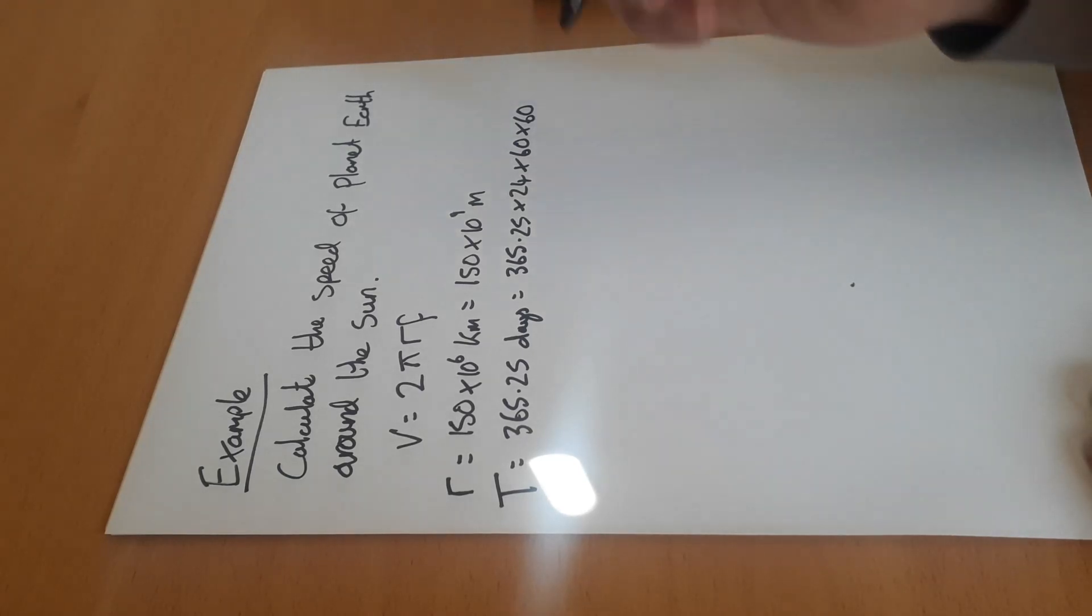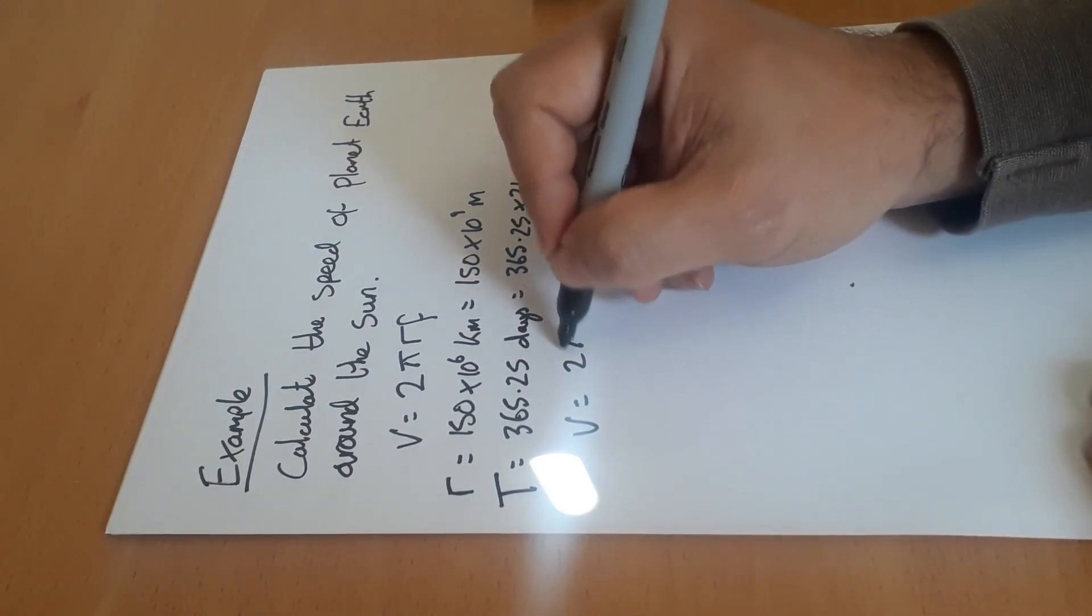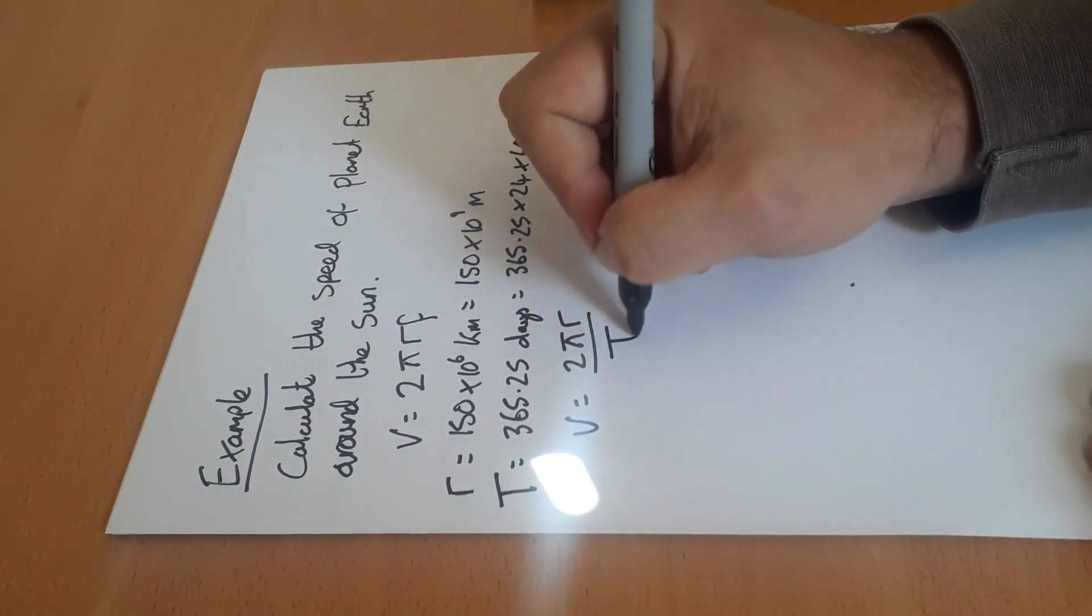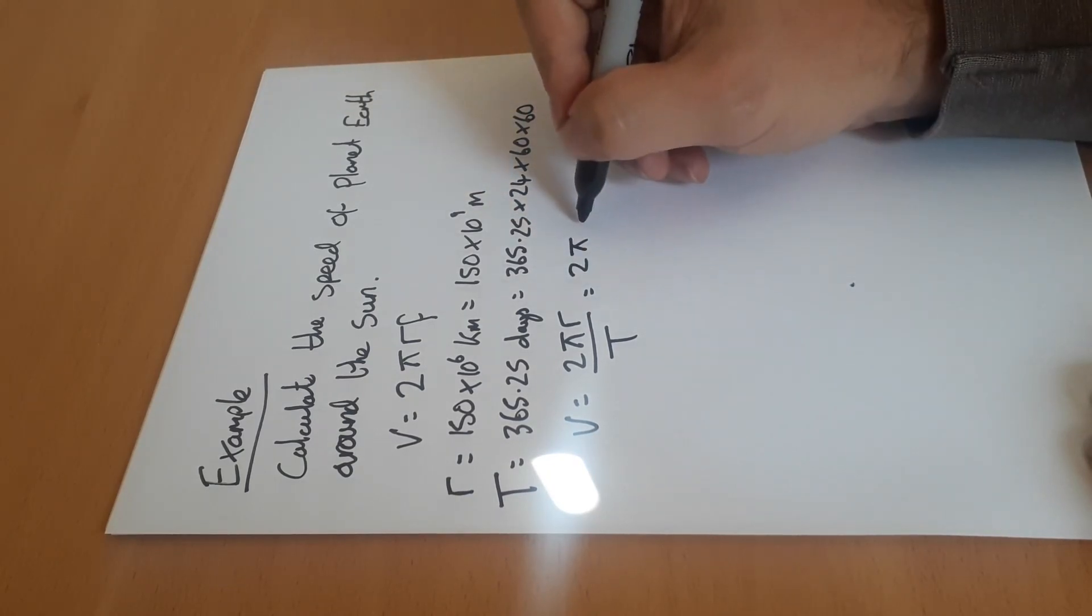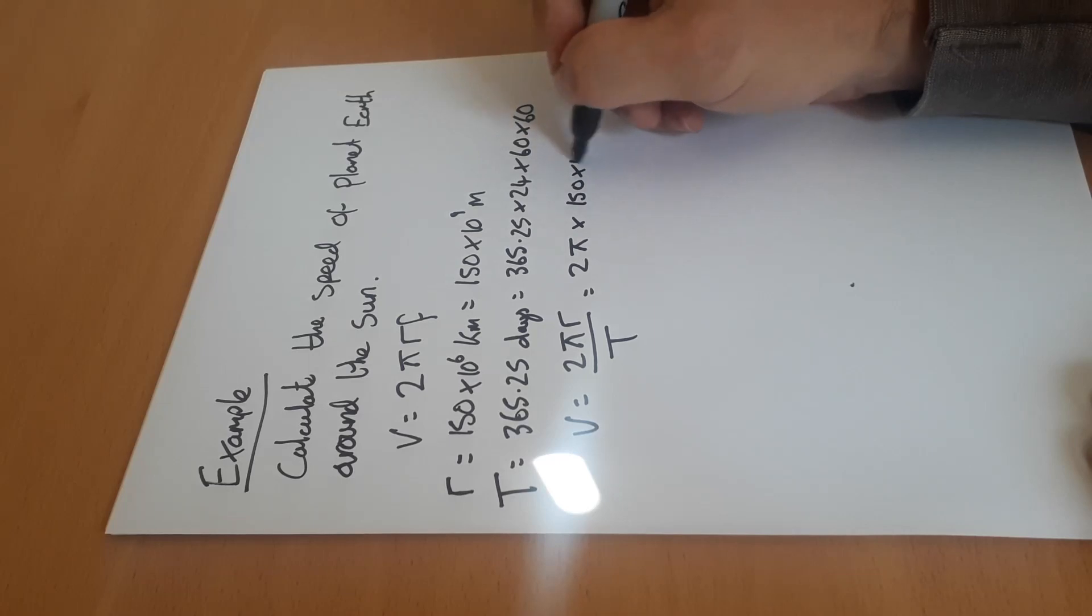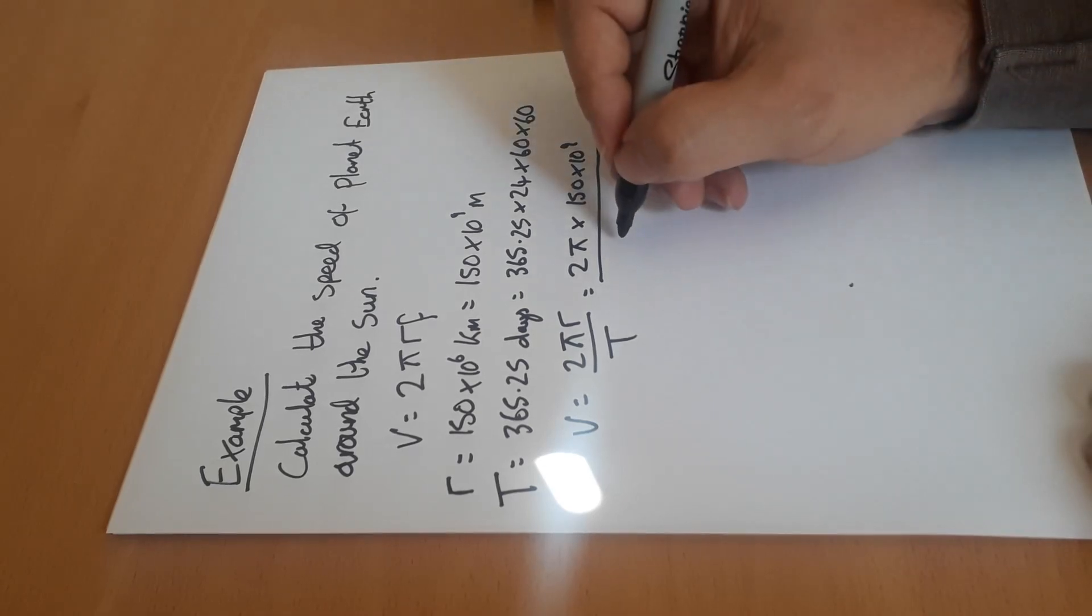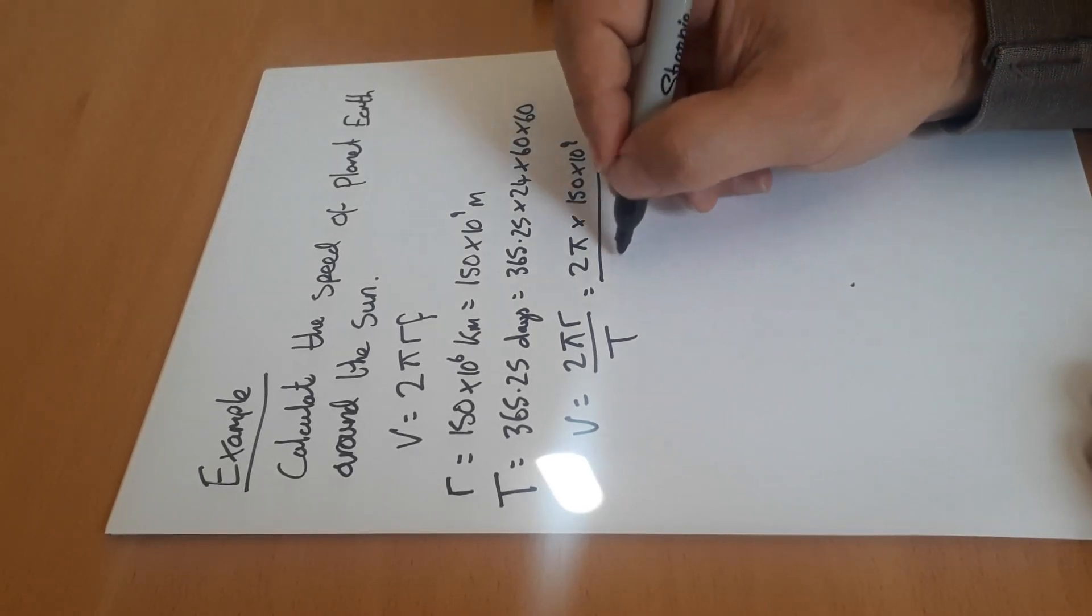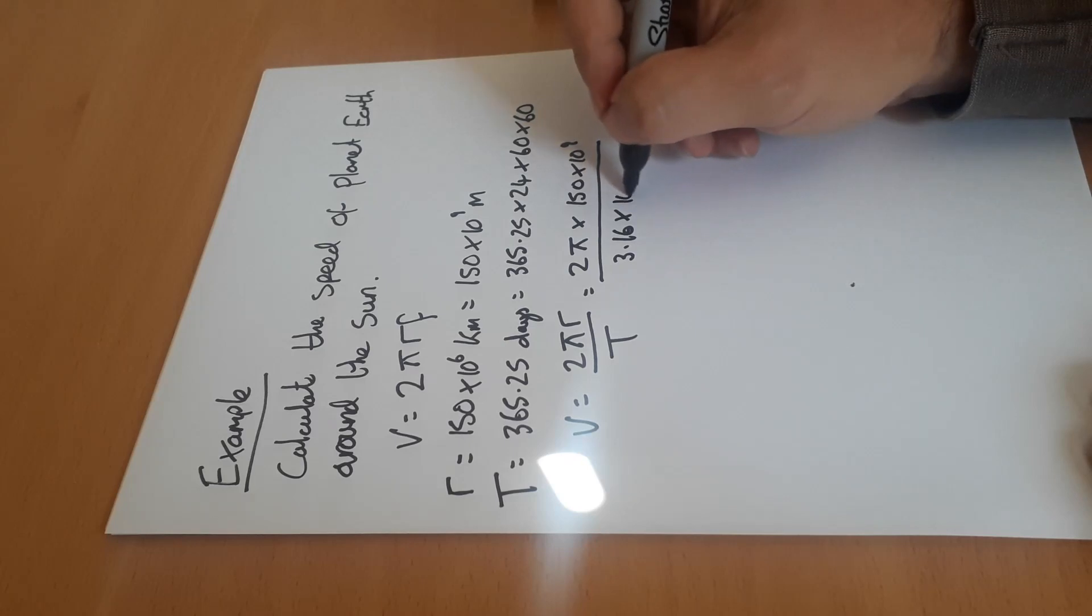Therefore v is equal to 2πr over T, which is equal to 2π times 150 times 10 to the 9 over - well that number there comes out at 3.16 times 10 to the 7 seconds.